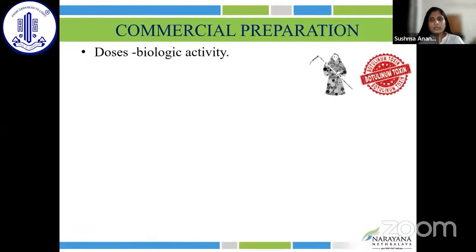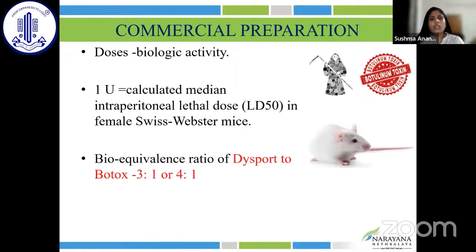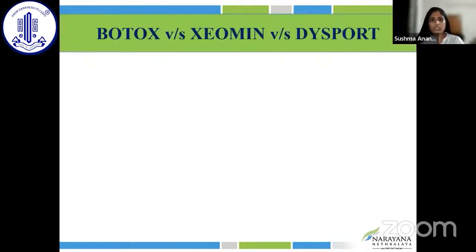The doses are expressed in terms of biological activity. One unit is the amount of toxin required to kill 50% of a population of female Swiss Webster mice when injected intraperitoneally. The bioequivalence ratio of Dysport to Botox is three-to-one to four-to-one. Thus, one unit of Botox equals one unit of Xeomin, which equals four units of Dysport. You cannot use Botox and Dysport interchangeably; however, you can use Botox and Xeomin interchangeably.